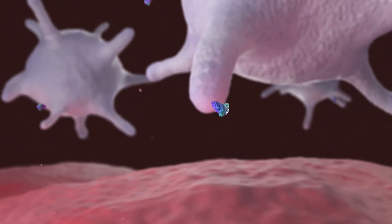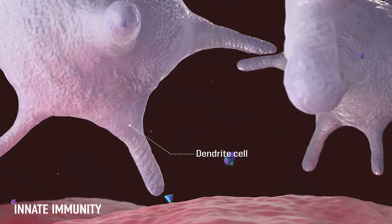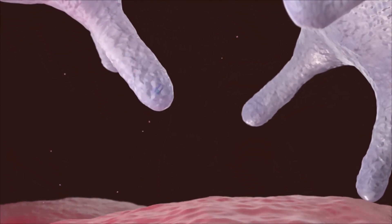First, as an innate immune response, antigen-presenting cells such as dendritic cells process spike proteins and deliver them to lymph nodes.